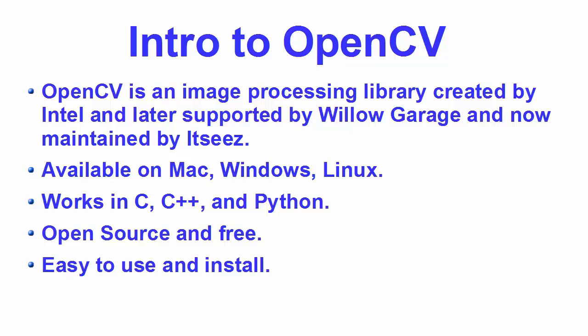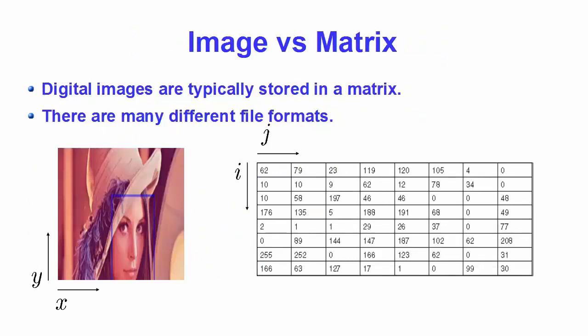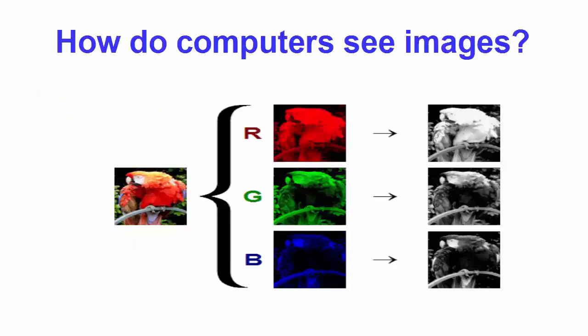Because OpenCV primarily deals with computer vision, that means dealing mainly with images or videos. I wanted to show you how a digital image is seen by a computer. Digital images are typically stored in the form of a matrix. If you have heard about PPI, or pixels per inch, which refers to display resolution — that means how many individual pixels are displayed in one inch of a digital image. When a computer sees a picture, it sees it as a pixel matrix. There are two types of digital images.